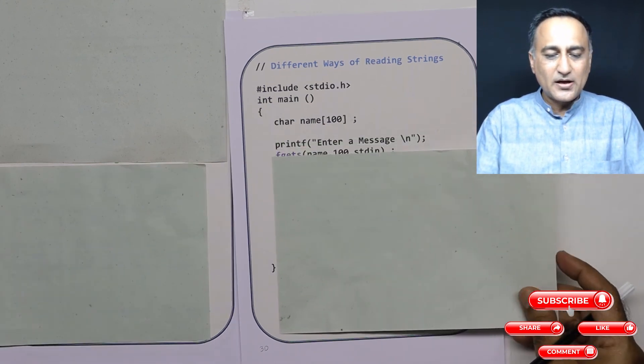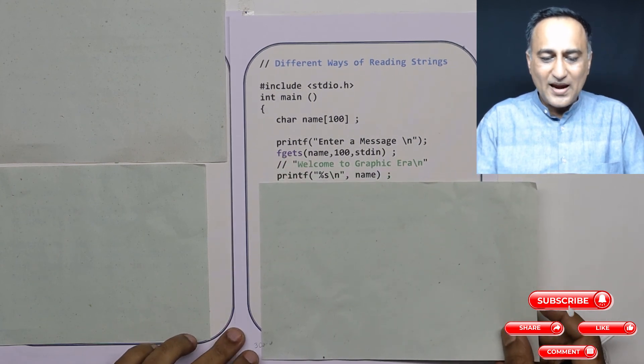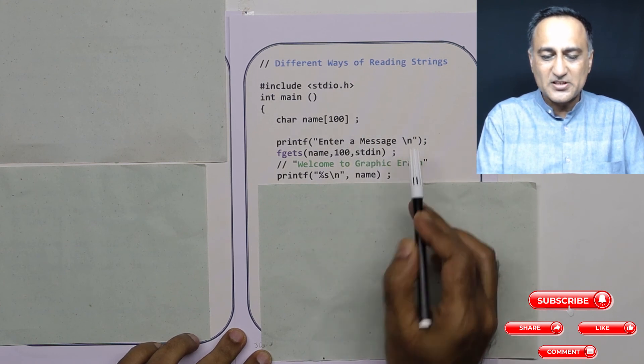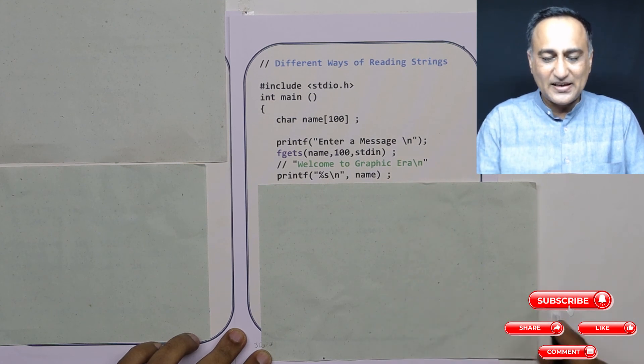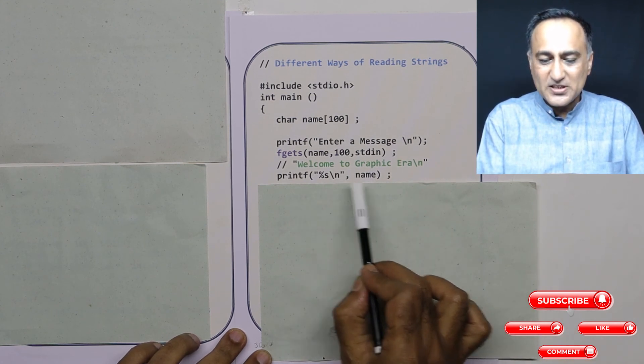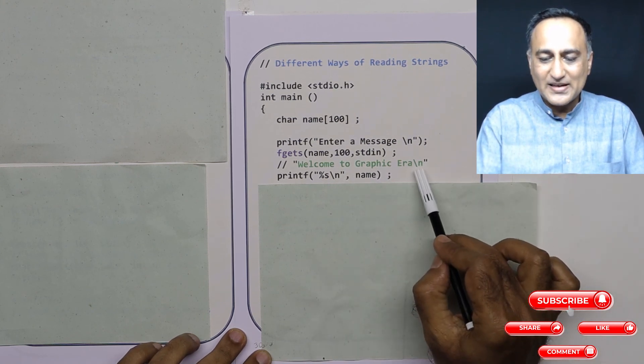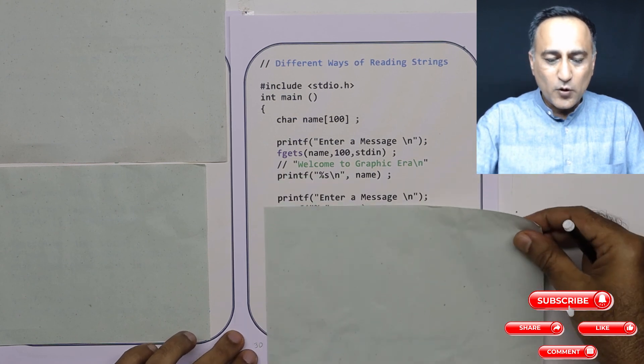Now let's take a look at this particular program. So here what I am doing is I have declared an array of characters name of 100. I'm asking a user to enter a message. Assume he enters the message 'welcome to graphic era' and presses the enter key. So if I print this message, this exact message is going to come on the output screen. After the backslash n, the null character is going to be appended.